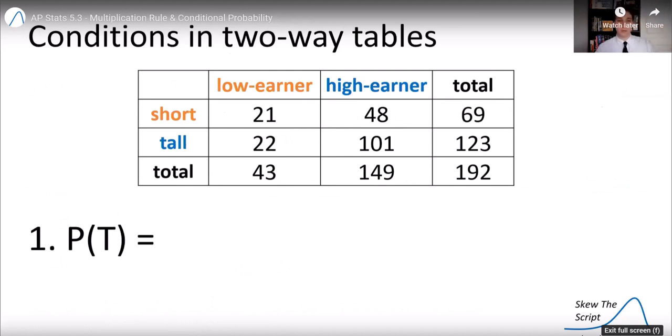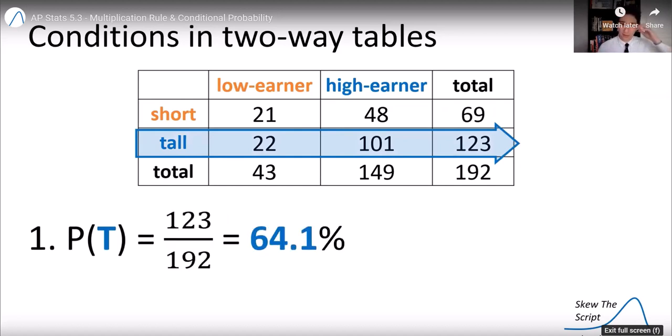So let's use this in a two-way table. So the probability of finding someone who's tall, we can get the total of the tall folks, that's 123, out of the grand total of the table, that's 192. That's 64.1%.